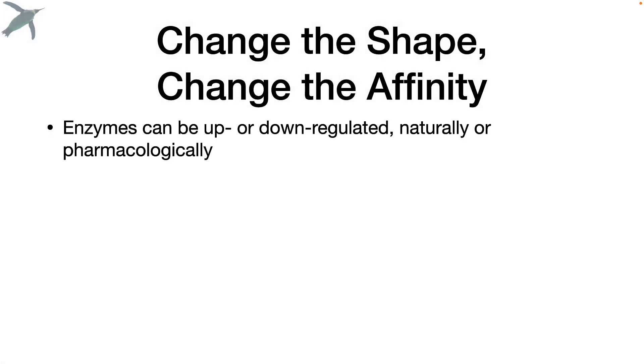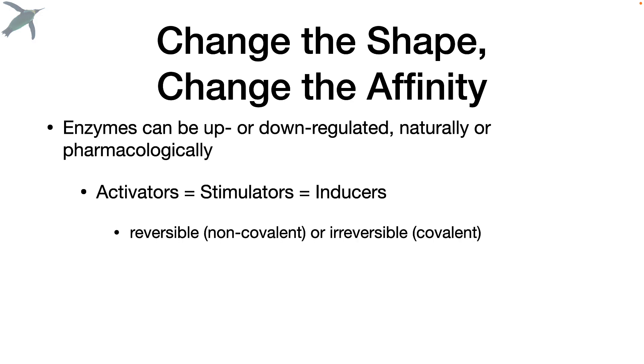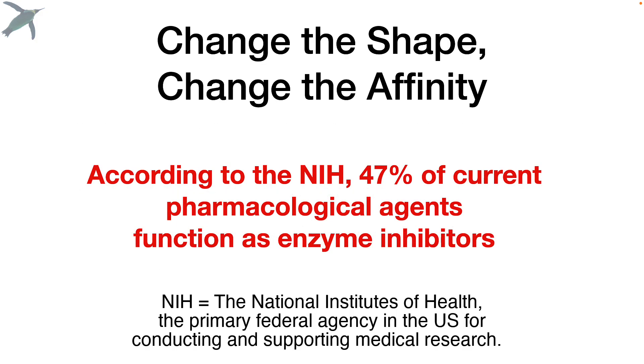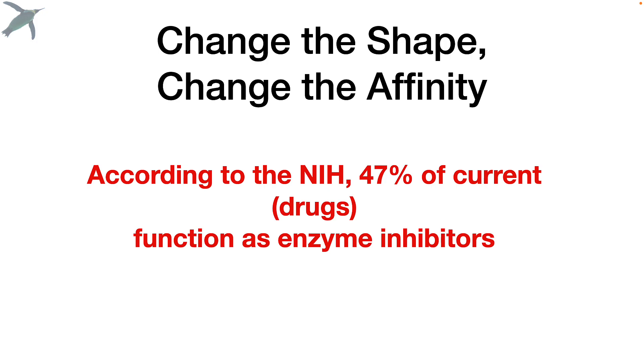Enzymes can be up or down regulated, either naturally or with drugs. We have activators, which are also called stimulators or inducers. And those can work either reversibly or irreversibly, depending upon how they're bound. We also have inhibitors. And again, those can be reversible or not. Now, according to the NIH, almost half of all current drugs on the market function as enzyme inhibitors. So this is a really big deal.